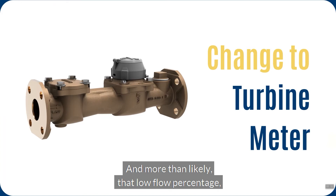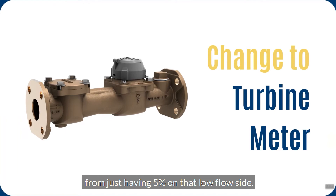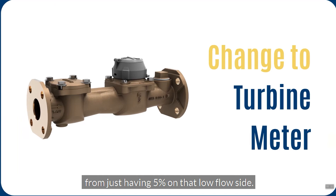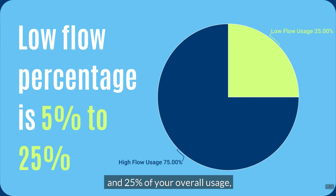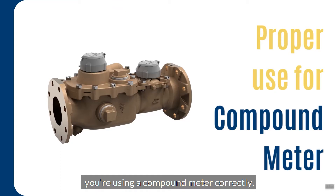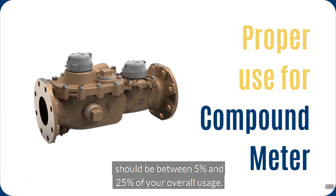More than likely, with that low flow percentage, you're not actually going to be losing a lot of revenue from just having 5% on that low flow side. The second guideline says: if your low flow percentage is between 5% and 25% of your overall usage, you're using a compound meter correctly. This is a proper use of a compound. The low flow registration side should be between 5% and 25% of your overall usage.